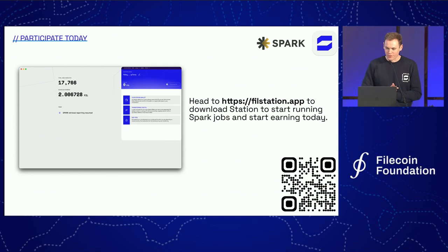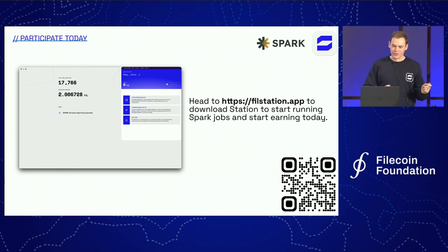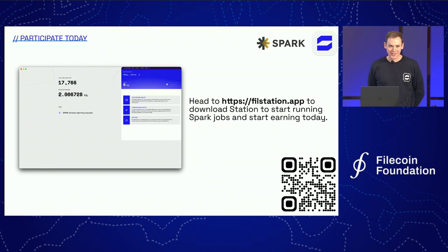To summarize what we went through today: we started off with the retrieval market space in general and all the teams working there; we highlighted a problem with retrieval from storage providers where the retrieval success rate is down at 10% due to a retrieval incentives issue; and we ran through the Spark protocol, which is really trying to target this and find ways to link retrieval back into the mechanisms that incentivize storage providers. If you'd like to start contributing, go to filstation.app, download the Station app, and you can start running Spark jobs today and start earning Filecoin. Please pick up some of the Station merch swag on your way out as well, and use the QR code to find the URL.